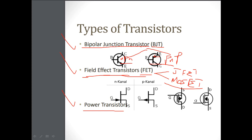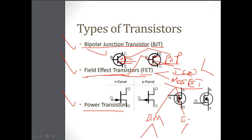We will start by learning about BJT for both NPN and PNP, including their operation and configurations. Then we will move to JFET — with N-channel and P-channel sub-types — and then to MOSFET, which has depletion-mode (D-MOSFET) and enhancement-mode (E-MOSFET) types, each with N-channel and P-channel variants. Finally, we will cover power amplifiers and amplifier classes A, B, and C at the end of this series.